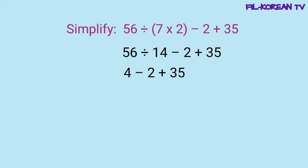Ang natitira na lang na operations ay subtraction at addition. Etong dalawang ito, left to right na yung gagawin natin — mag-minus muna tayo bago mag-plus. 4 minus 2 equals 2. At last: 2 plus 35 equals 37. Yung answer dito sa problem na ito ay 37.